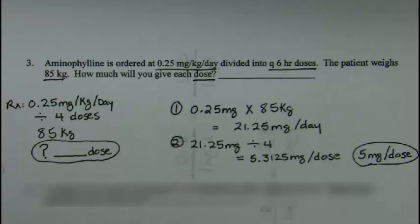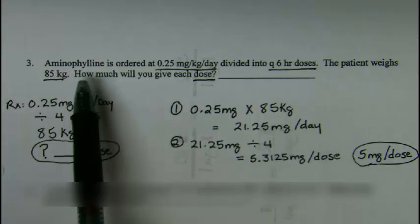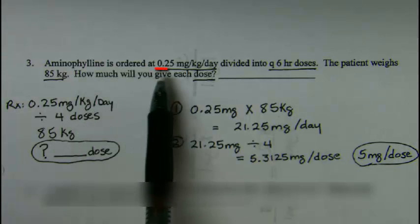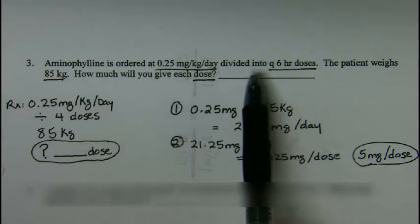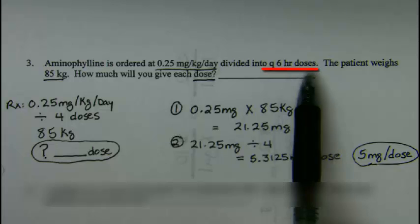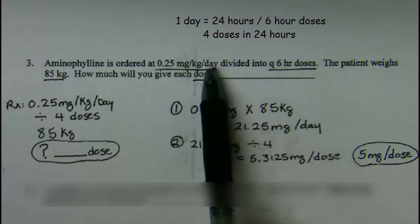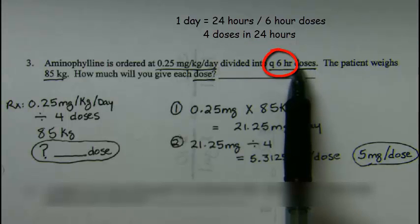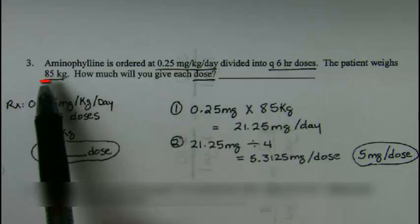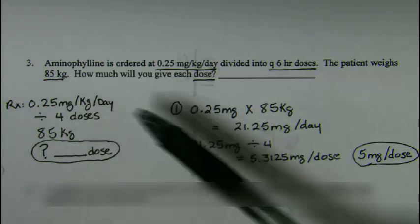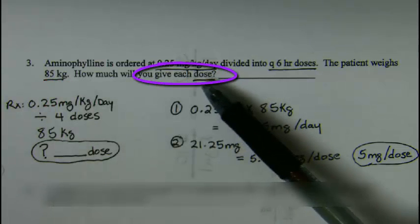With problem number three as an example, Aminophylline is ordered at 0.25 milligrams per kilogram per day divided into Q six-hour doses. That means if this is a day order and it's given every six hours, there will be four doses in a day for a patient that weighs 85 kilograms. How much will you give each dose?